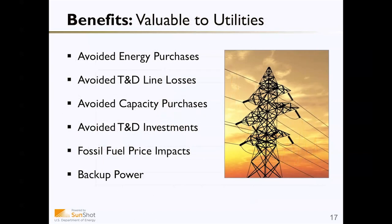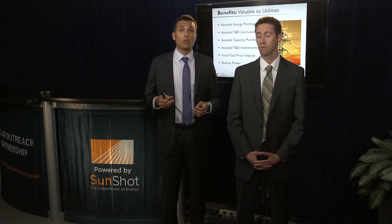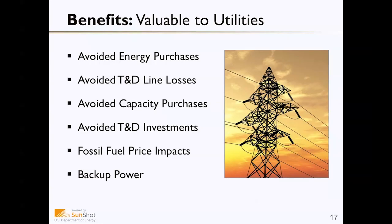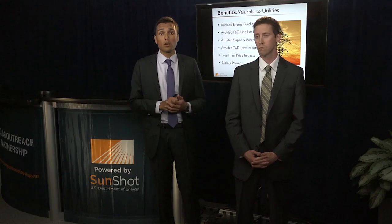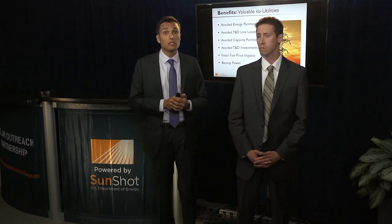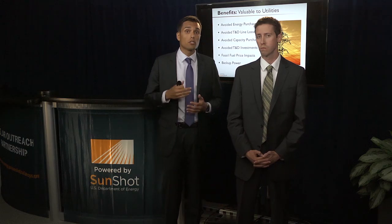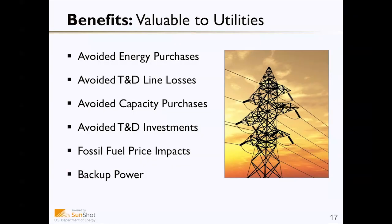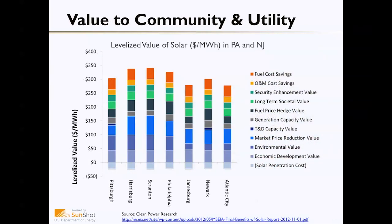One benefit of solar that isn't talked about as much is what it provides to utilities. Because distributed solar power is built on the site where it's being used, it requires less purchasing from the utility for other generation sources. Additional benefits include reduced investment required for transmission and distribution lines, particularly long-range lines, since we're not building centralized power plants. There's also significantly more efficiency in getting power from source to user. When you stack all of these various benefits together, the value that solar can provide can be almost double or even triple the underlying retail price of electricity.